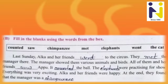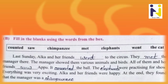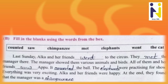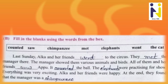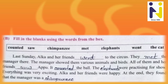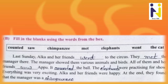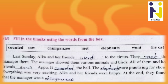Activity B: Fill in the blanks using the words from the box. — 'Box ma apela shabdano upyog kari niche ni khali jagyo puro.' The paragraph here is based on Activity A but is in simple past tense instead of present continuous. Last Sunday, Alka and her friends went to the circus.